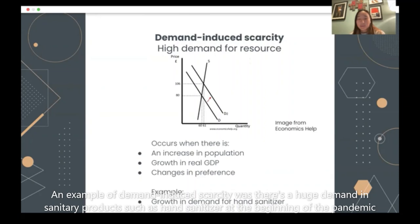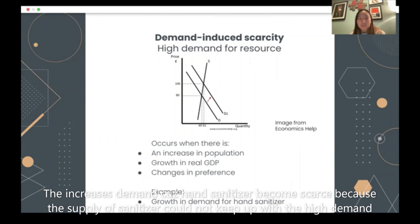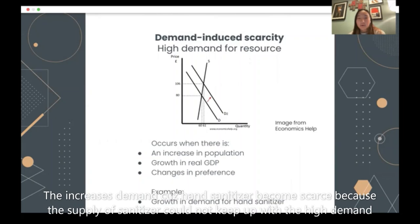An example of demand-induced scarcity was when there was a huge increase in demand for sanitary products like hand sanitizer at the beginning of the pandemic. This increase in demand caused hand sanitizer to become scarce because the supply could not keep up with the high demand for it.